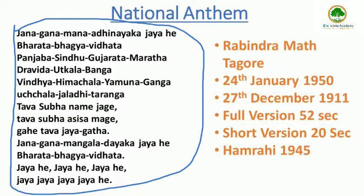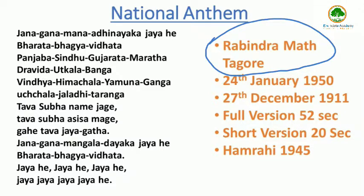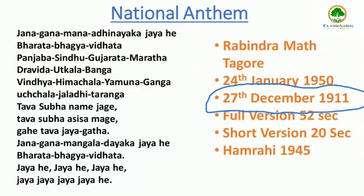National Anthem: Jana Gana Mana is the National Anthem of India. It was originally composed as 'Bharoto Bhagyo Bidhata' in Bengali by poet Rabindranath Tagore. The first stanza of the song was adopted by the Constituent Assembly of India as the National Anthem on 24 January 1950. It was first publicly sung on 27 December 1911 at the Calcutta Session of the Indian National Congress.